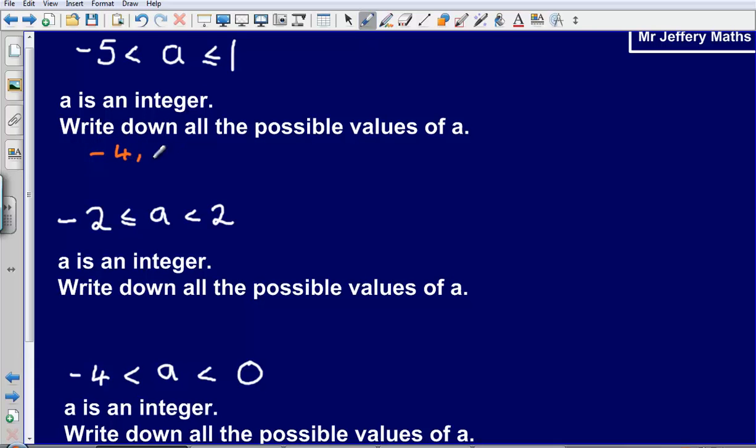So minus 4 could be minus 3, could be minus 2, minus 1, 0, and 1. They are the only possible numbers that a could be.